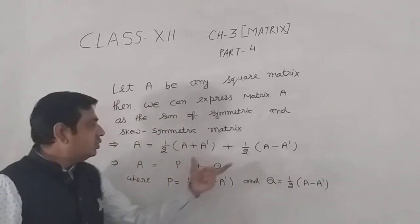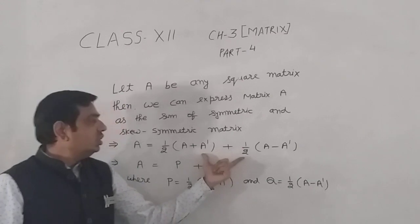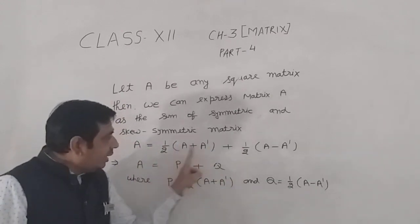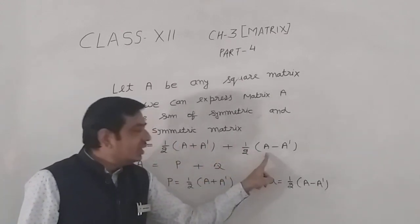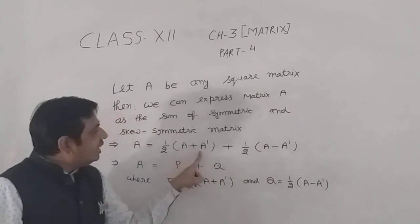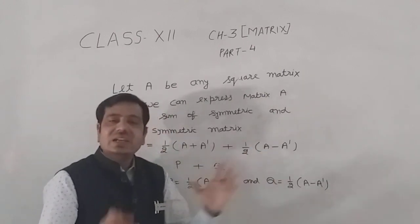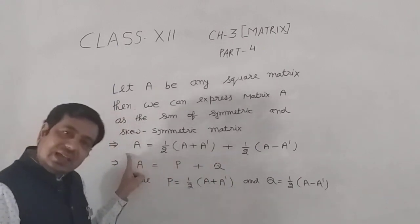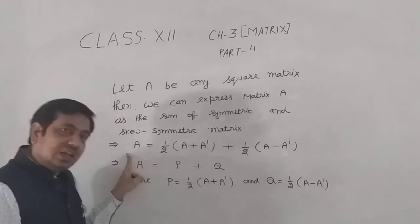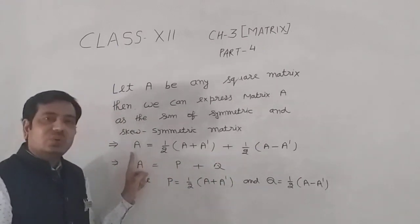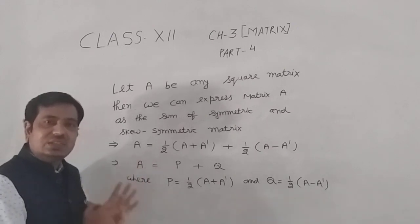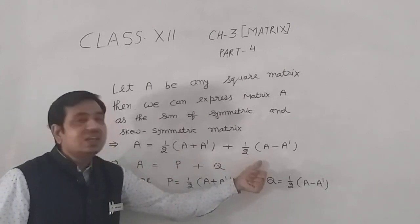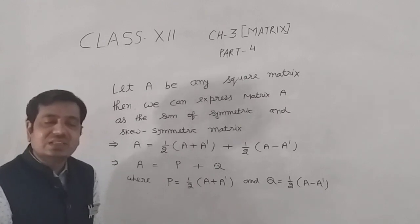One more thing — if you solve P plus Q you get back A. Let's check: half A plus half A is A, and half A' minus half A' cancels out. So P plus Q equals A again. This confirms the formula to express any square matrix as a sum of symmetric and skew symmetric matrices.